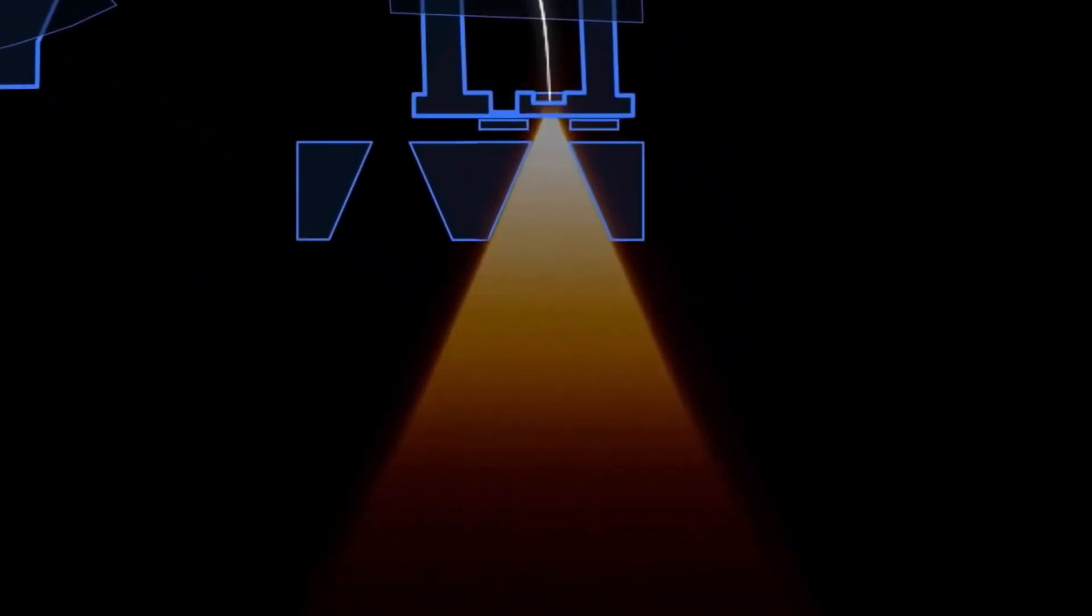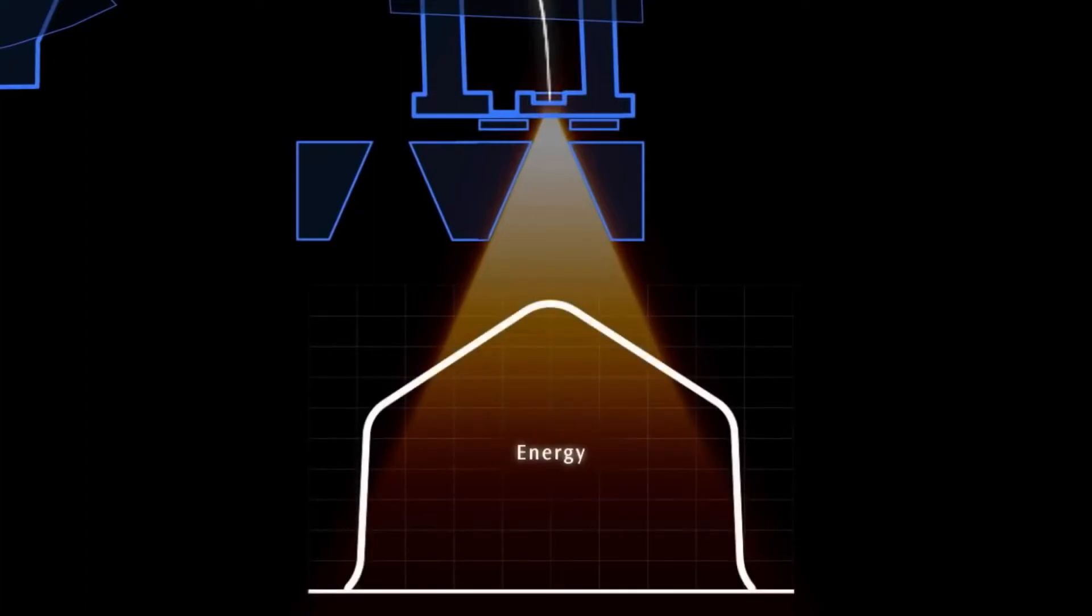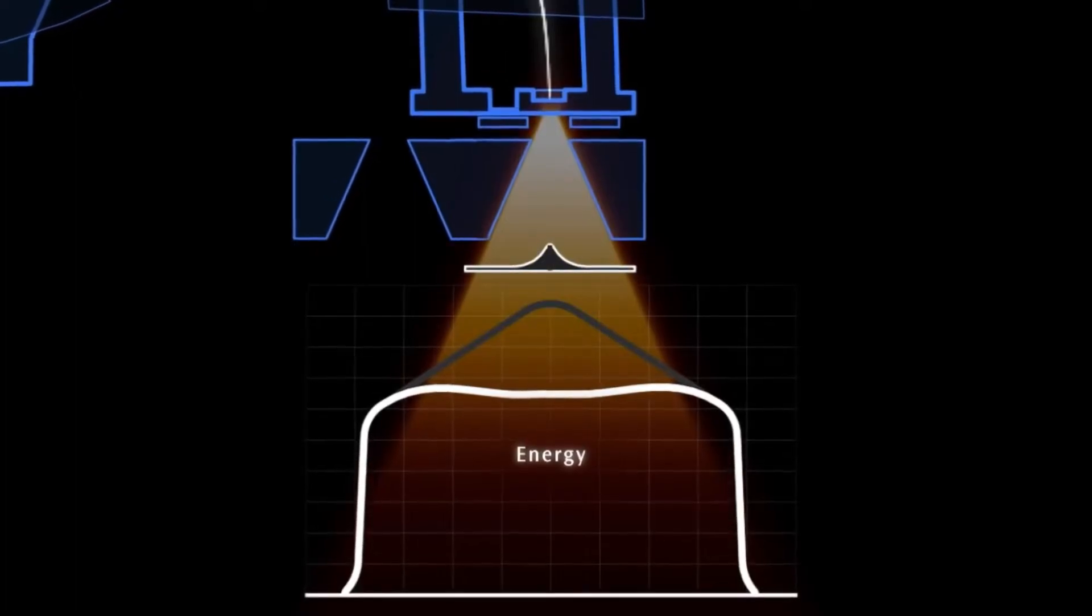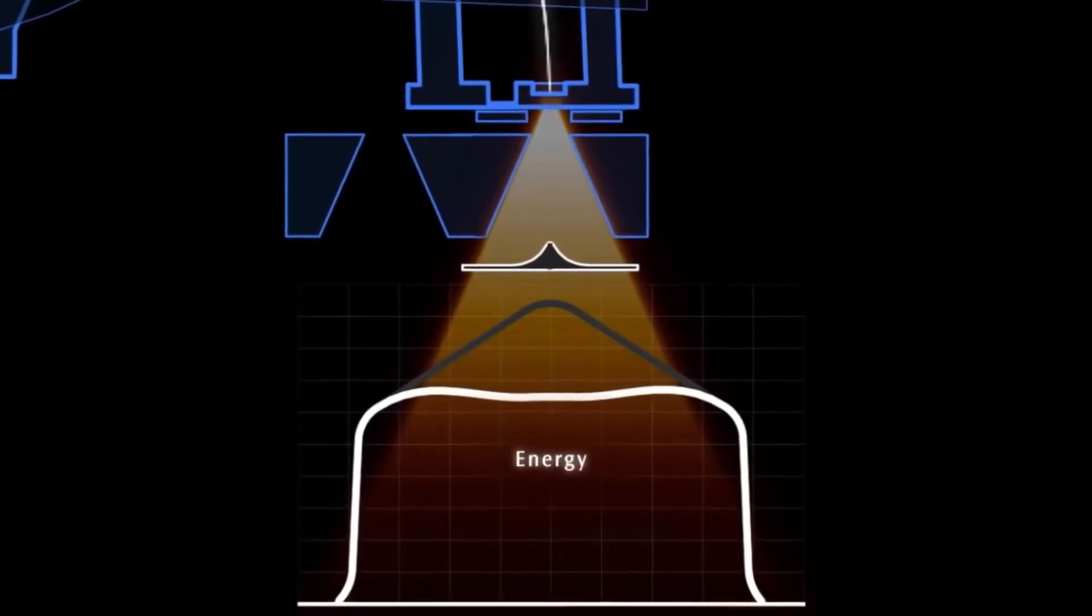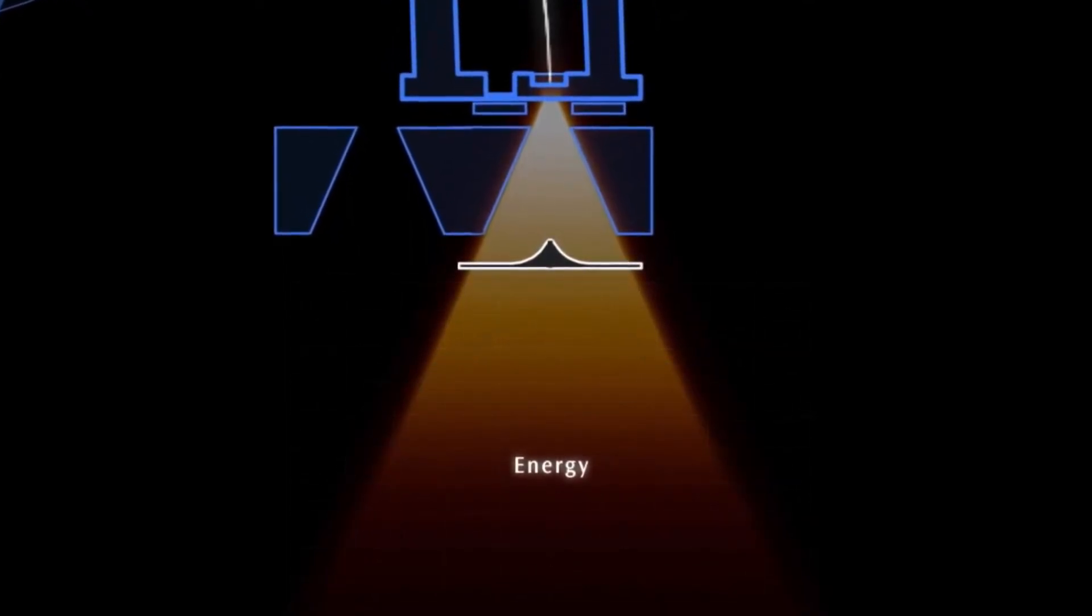At this stage, the photons are not uniformly distributed across the beam, and so a flattening filter is placed in the path of the beam. The cone-shaped filter absorbs more photons from the center of the beam than from the sides, creating a uniform photon beam.